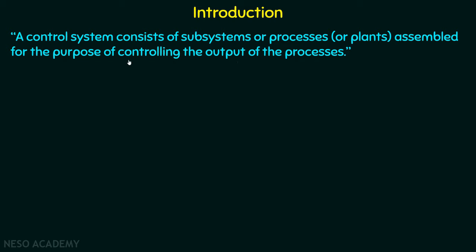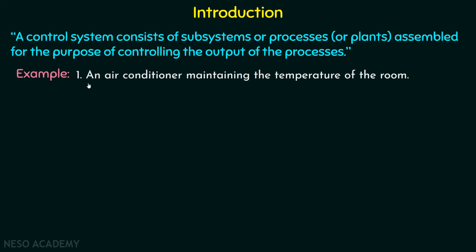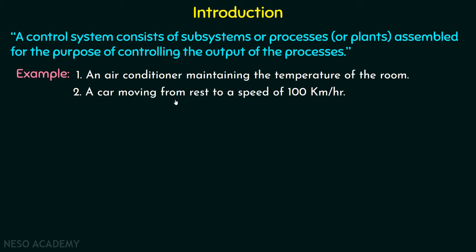We can say that any control system will take an input, process it in a predefined manner, and generate a desired output. For example, an air conditioner maintaining the temperature of a room — here the air conditioner is the control system and the maintained temperature is the desired output. Another example: a car moving from rest to a speed of 100 km/h, where the car's elements are the control system and 100 km/h is the desired output.